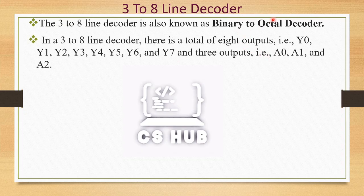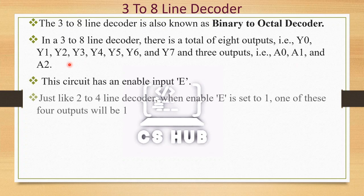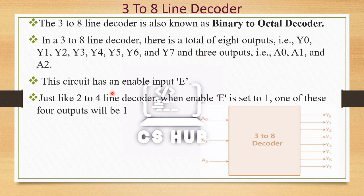In the 3-to-8 line decoder, there are 8 outputs: Y0, Y1, Y2, Y3, Y4, Y5, Y6, and Y7, and 3 inputs: A0, A1, and A2. The circuit also has an enable input E. Just like the 2-to-4 line decoder, when enable E is set to 1, one of the 8 outputs will be 1 based on the input combination.